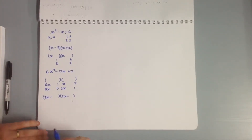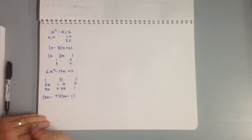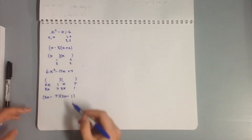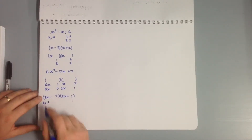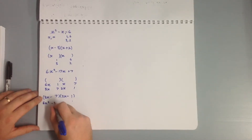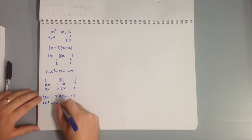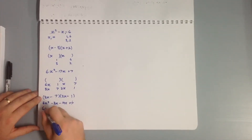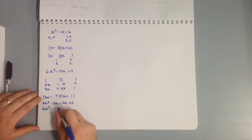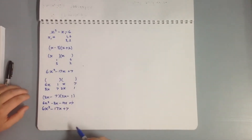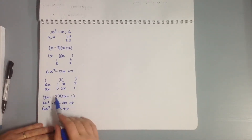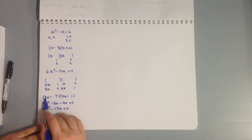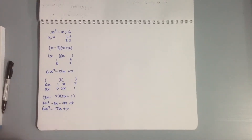So our answer is (3x - 7)(x - 1). To double-check by expanding: 3x × 2x = 6x², then 3x × (-1) = -3x, and (-7) × 2x = -14x, plus 7. That gives us 6x² - 17x + 7 as required. If we'd put the 1 and 7 the other way, 3 × 7 = 21 and adding 2 would give 23, so that wouldn't have worked.